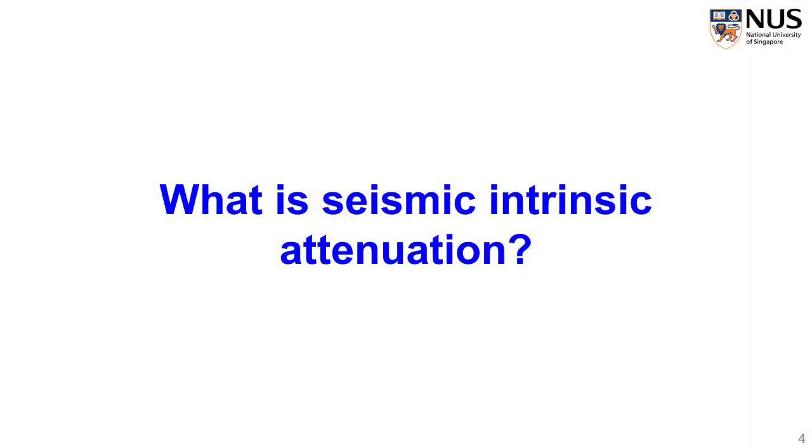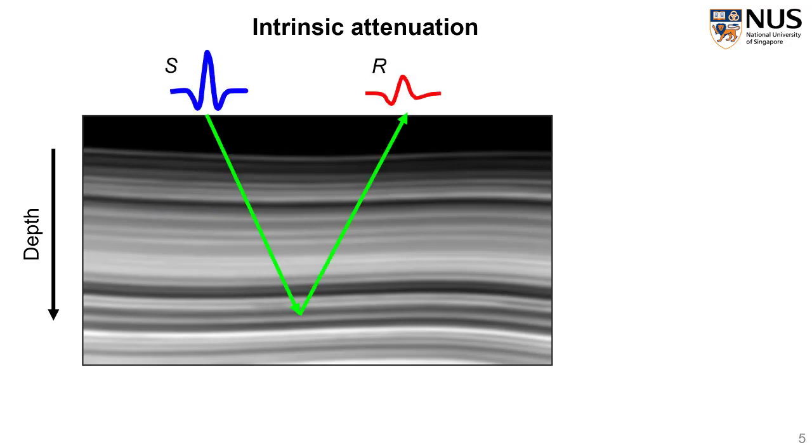For my research topic, what is seismic intrinsic attenuation? Basically, the intrinsic attenuation is also one type of the subsurface physical information that we are interested in. It indicates the kinematic energy loss to heat during wave propagation because of wave-induced grain boundary friction and pore fluid flow. The intrinsic attenuation is generally quantified by this parameter called Q factor, or Q, which is inversely proportional to the attenuation rate.